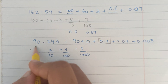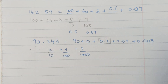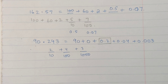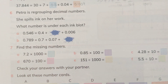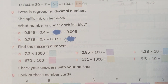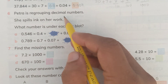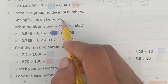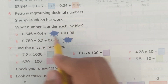If any of these numbers is missing, you just expand the given number on your own and figure out which one is missing, then fill in the blank. In question number six, Patra is regrouping decimal numbers and spills ink on her work.